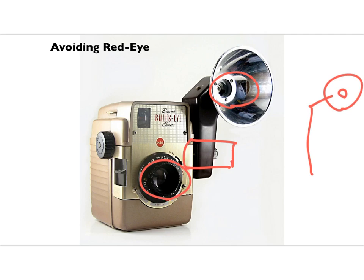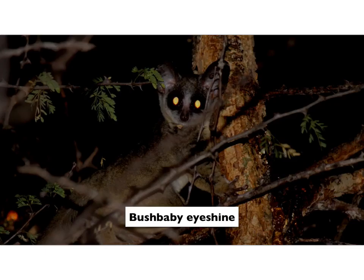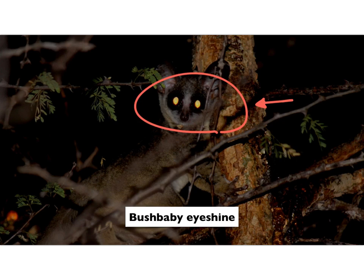If we look at different animals and their eye shine, it's no surprise that the bush baby is number one in this category. They're nocturnal, so their vision has to be really, really good. They've got a phenomenal eye shine and a very well-developed tapetum.